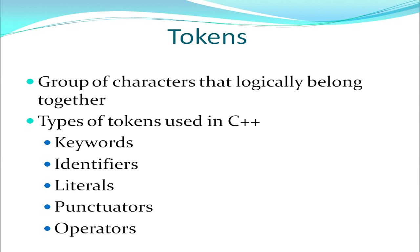So these are the three basic data types: integers, floats, and characters. We move on to the next topic — tokens. When I group characters that logically belong to each other to perform a particular job, they form tokens. The types of tokens used in C++ are keywords, identifiers, literals, punctuators, and operators. We will be covering all these one by one.